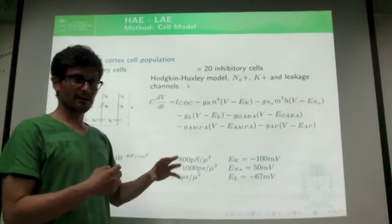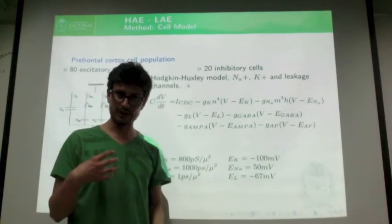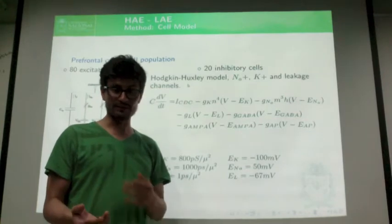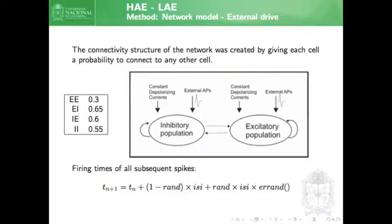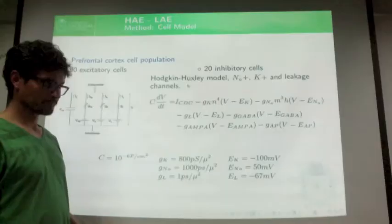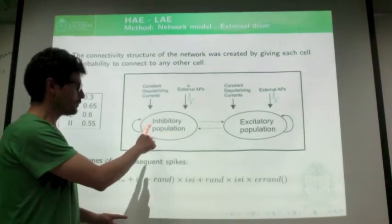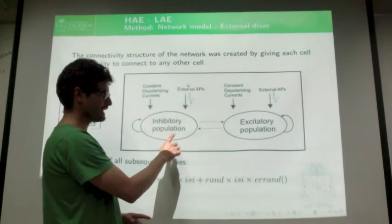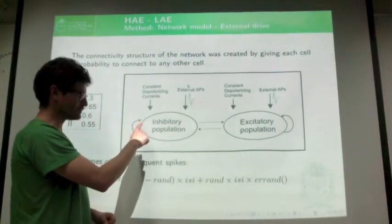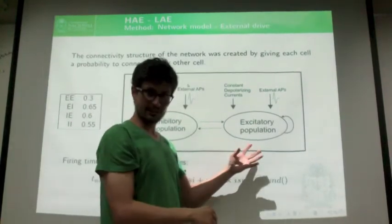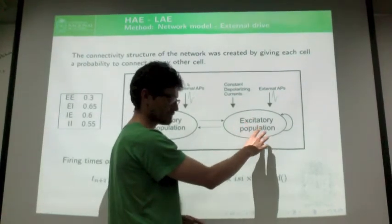The ratio used here — 80 excitatory neurons and 20 inhibitory neurons — reflects the ratio in our brains, where we have more excitatory neurons than inhibitory neurons. Here is the structure of the network: we have a population of inhibitory neurons which makes inhibitory connections with the excitatory population and also among themselves. The excitatory population has excitatory connections with the inhibitory population and also among itself.